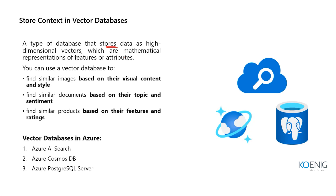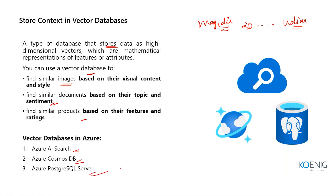The vector database stores data where magnitude and direction can be held, from two-dimensional up to n-dimensional. It is used to find similar images based on visual content and style, find similar documents based on topic and sentiment, and find similar products based on features or ratings. You can use Azure Search, Synapse, Azure AI Search, Cosmos DB, or PostgreSQL Server to store context in vector databases.